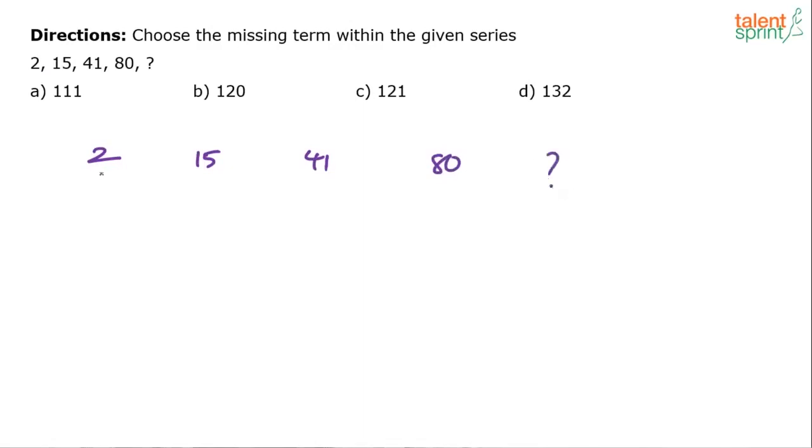I think the easiest thing to try is to find out the difference between the numbers. Between 2 and 15 it is like 2 plus 13 gives you 15. 15 plus 26 gives you 41. 41 plus 39 gives you 80. Now try to observe, is there a pattern here in these numbers? 13, 26, 39? Yes.